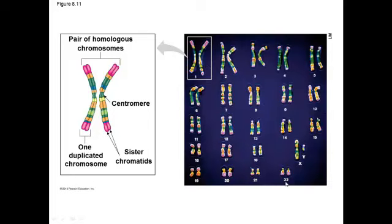As you can tell, the Y chromosome is very small and the X is much larger. This is why, if there are genes on the X chromosome that are deleterious or bad, they're often expressed more in males, because males don't have a secondary X to try to override any bad genes on the X. That's another discussion for later in the semester.